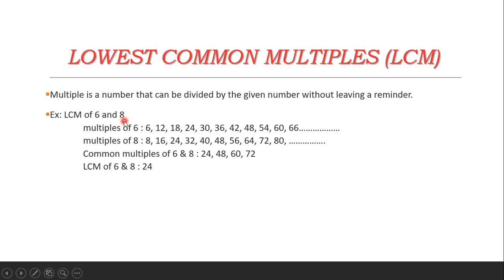Previously we learned how to find multiples — multiples means nothing but tables. So here we have to find the LCM of 6 and 8. First we have to write multiples of 6: 6, 12, 18, 24, 30, 36, 42, 48, 54, 60, 66, etc.